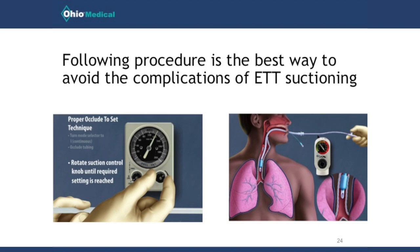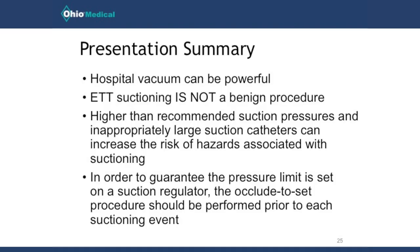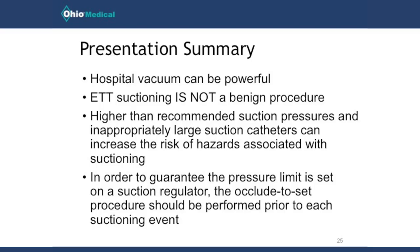Always use either the occlude-to-set or push-to-set procedure depending on the technology available at your facility. To summarize: hospital vacuum can be very powerful — remember, it can be up to negative 635 mmHg. As the pig lung demonstration showed, we should always check pressure before every procedure. Endotracheal tube suctioning is not benign — it can cause atelectasis and direct airway trauma. Using higher than recommended suction pressure or an inappropriately large suction catheter increases the risk of those hazards. The only way to guarantee a pressure limit is set is to use the occlude-to-set or push-to-set technique.